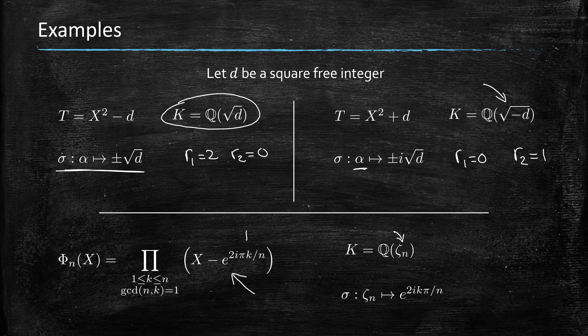Where here you have the power as a product of X minus the powers of this root that correspond to a k that is coprime with n.